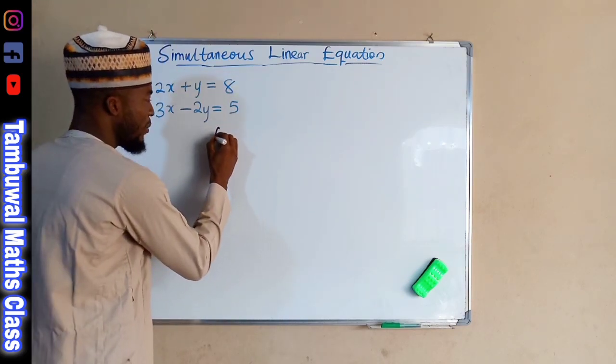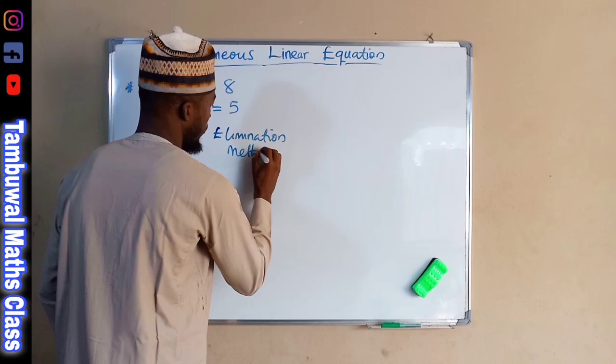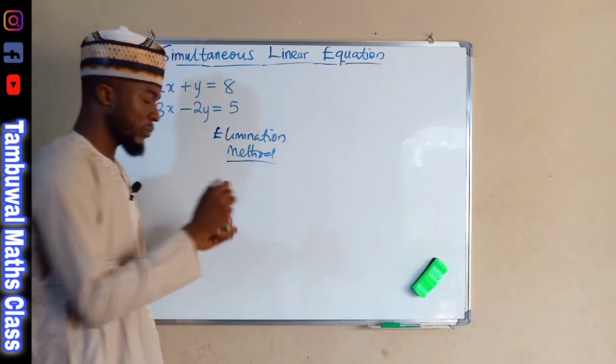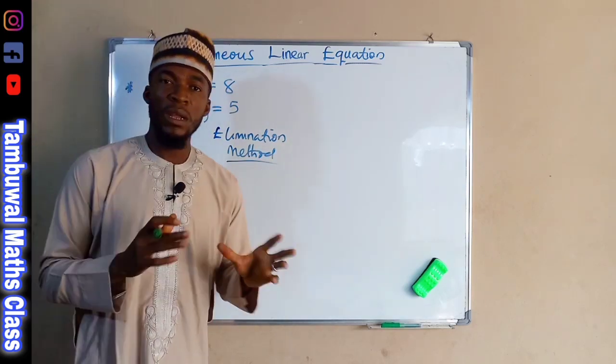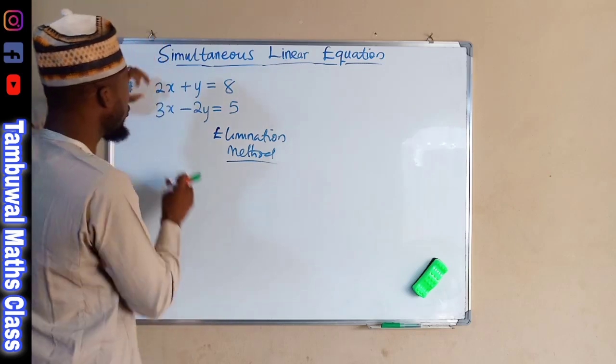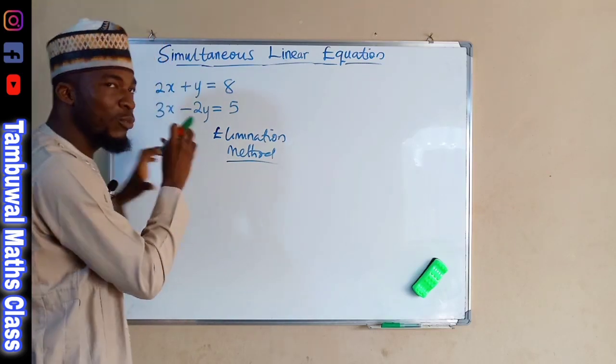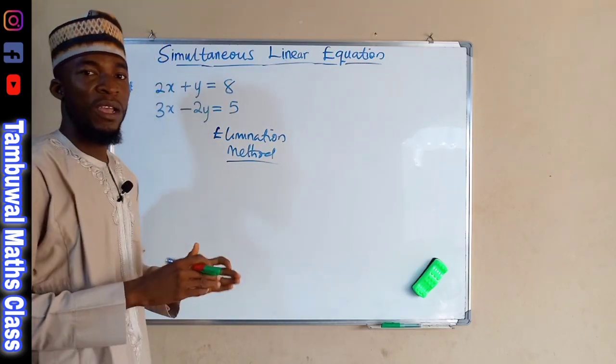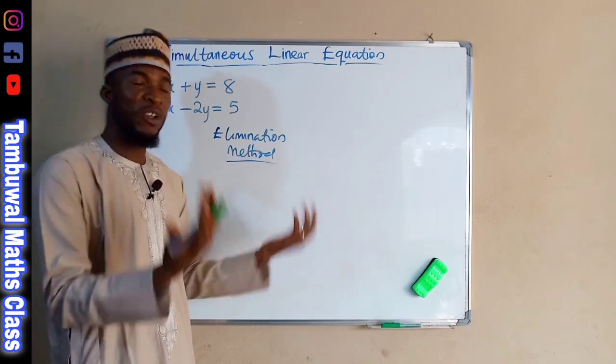So, the first method is elimination method. In elimination method, we are going to completely remove one of these variables, either X or Y, in both equations.